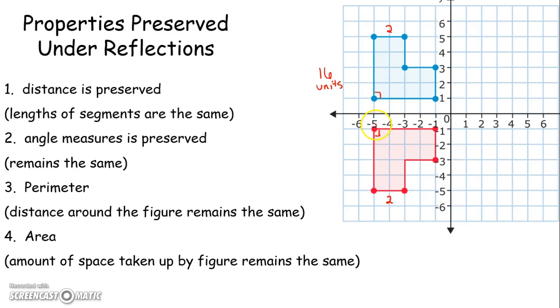So the perimeter here should still be 16. 1, 2, 3, 4, 5, 6, 7, 8, 9, 10, 11, 12, 13, 14, 15, 16. 16 units. Perimeter or the measure around the outside remains the same.